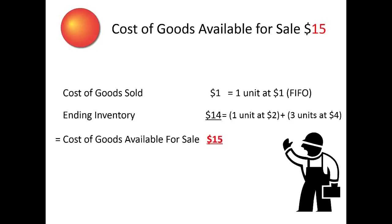What this reconciliation shows is that the cost of all of the company's goods potentially available for sale during the period will either have been expensed during the period as cost of goods sold — $1 in this case — or will still be on hand in ending inventory — $14 in this case.